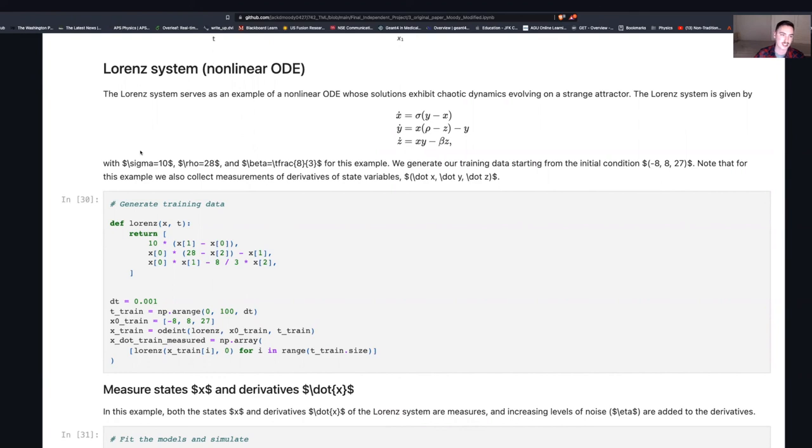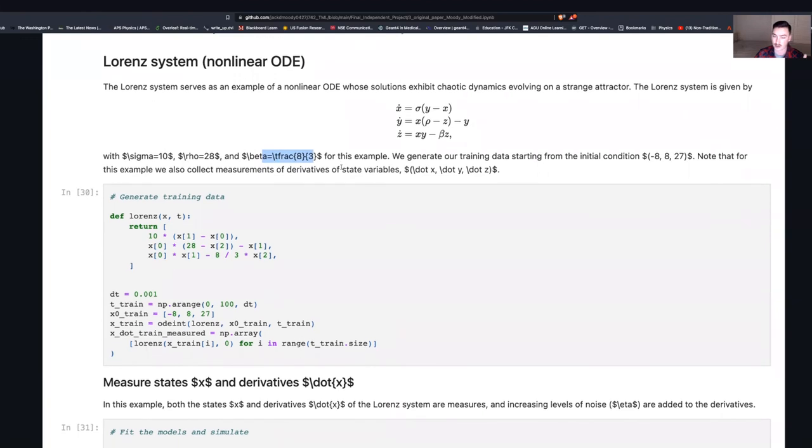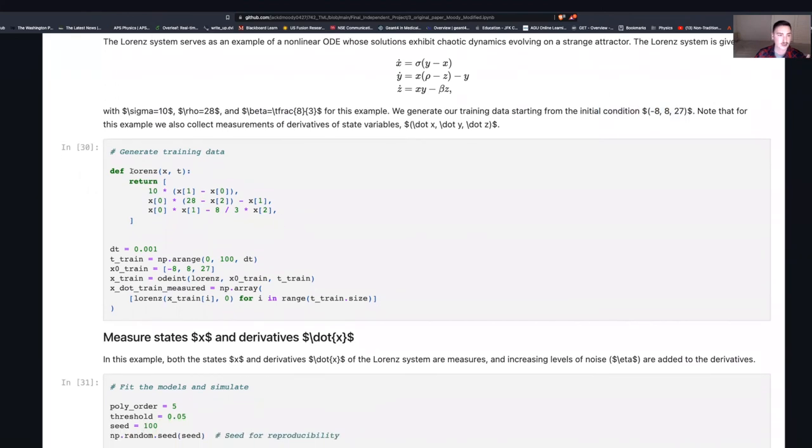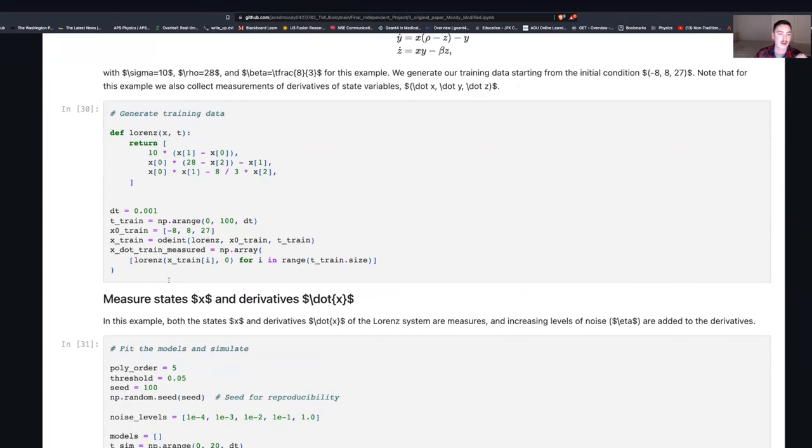Here we can see the coefficients, sigma = 10, rho = 28, beta = 8/3, which is a very canonical way of setting those coefficients. And we're going to start with an initial condition in a position for this attractor at -8, 8, and 27. Again, same as normal, we generate the training data.